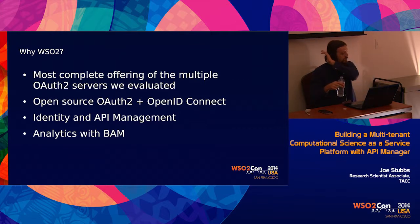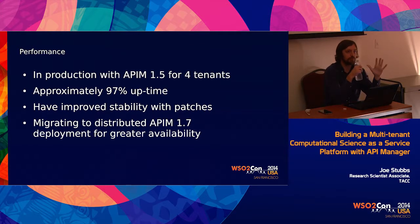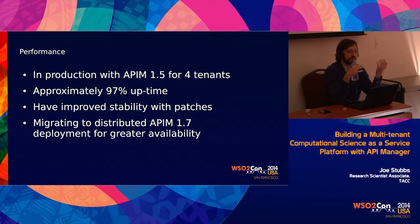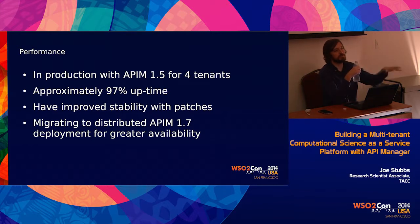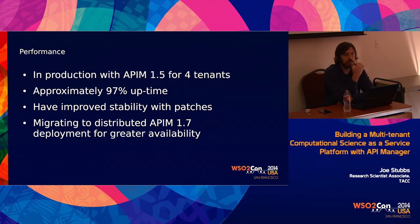A little bit about performance. We've improved it over time. We're about 97% uptime on our OAuth layer, which is not where we want to be — we want to be at three nines or even four nines, and we have some plans for that. We've improved stability with some patches and we're migrating to API Manager 1.7. These statistics are for 1.5. We've been doing some load testing on 1.7 and we're quite confident — everything looks good and it's going to be much more stable for us.